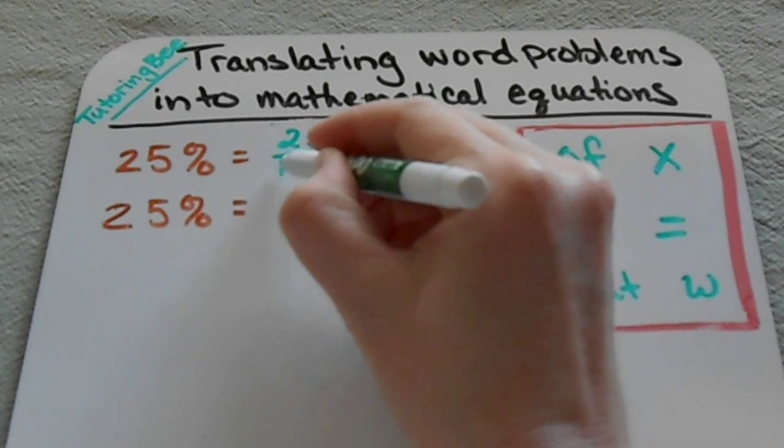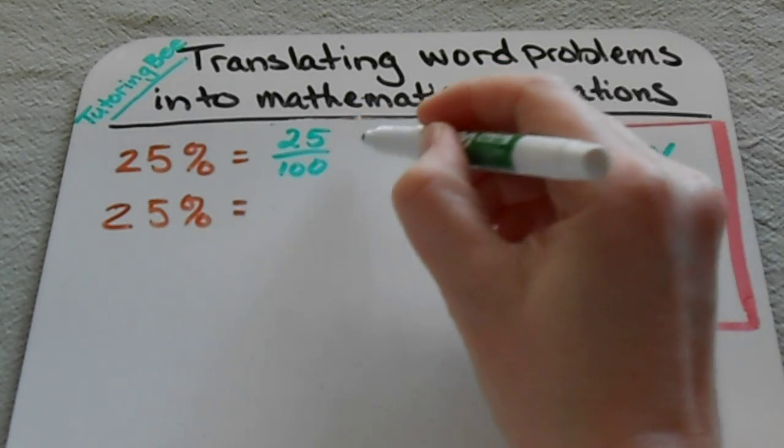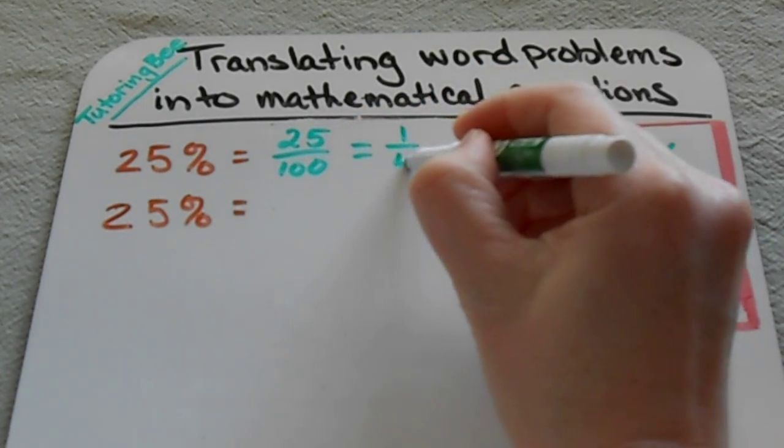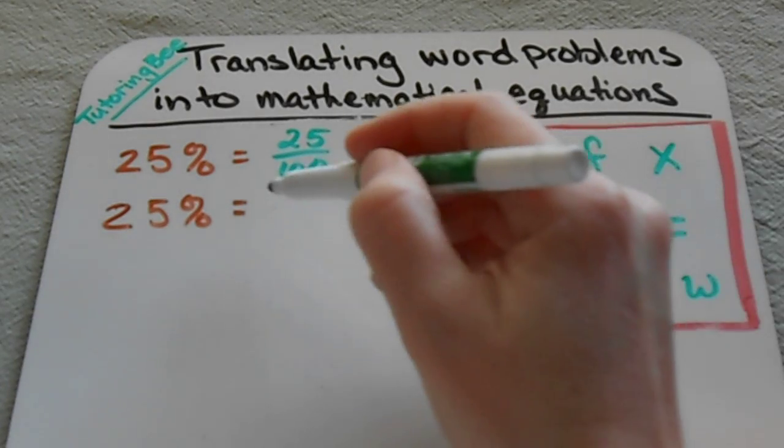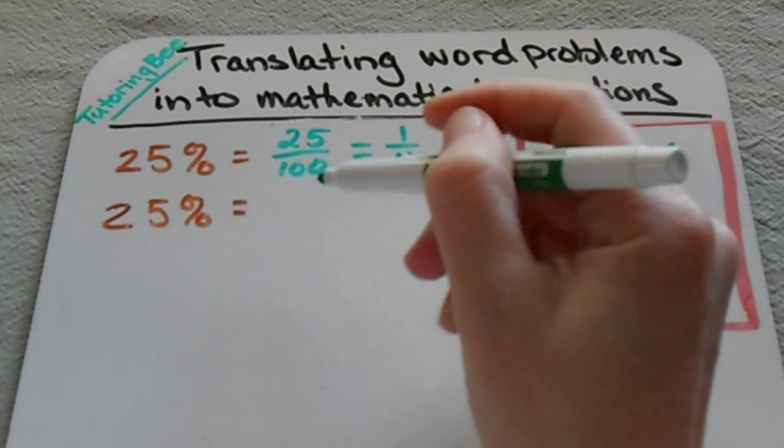So 25% can be written as a fraction, which is 25 over 100, and then we can reduce that to one-fourth. But then actually for these problems we're going to need the decimal form.